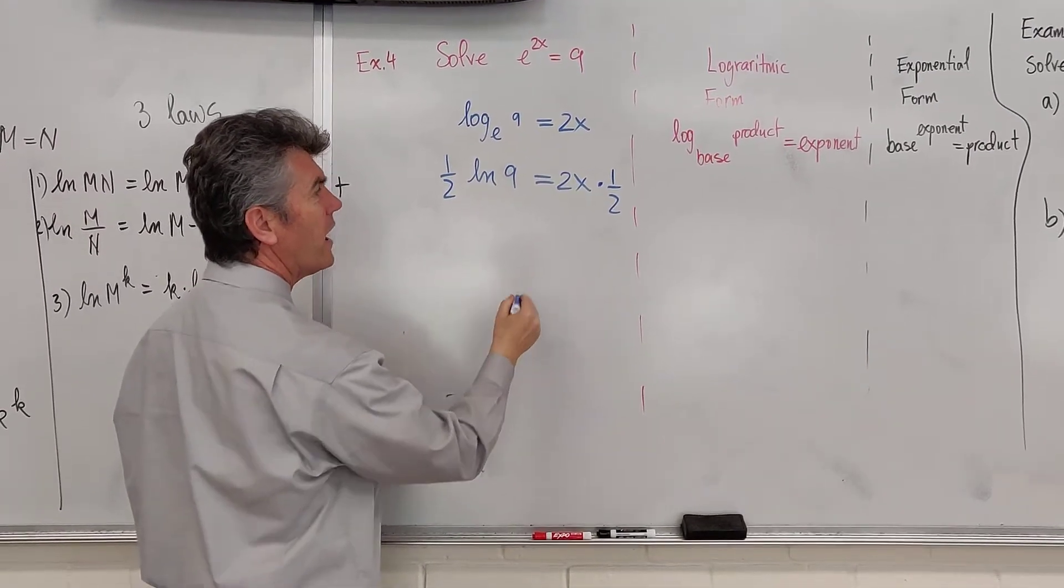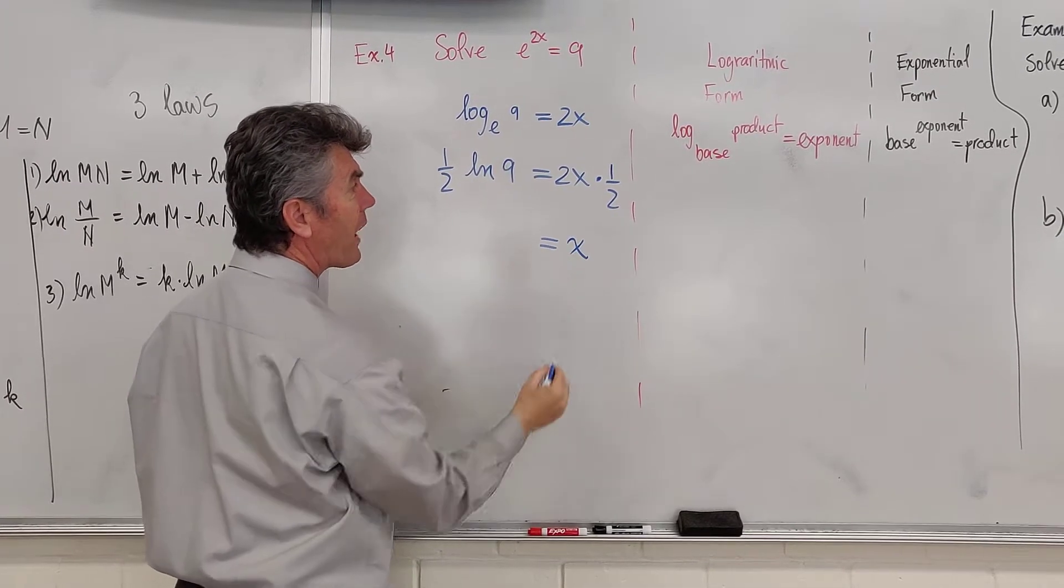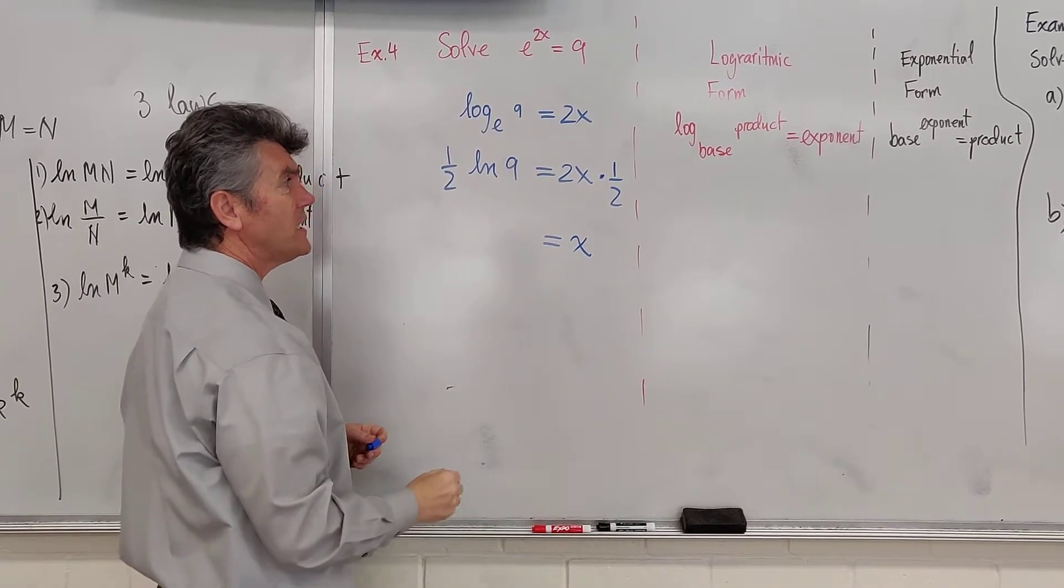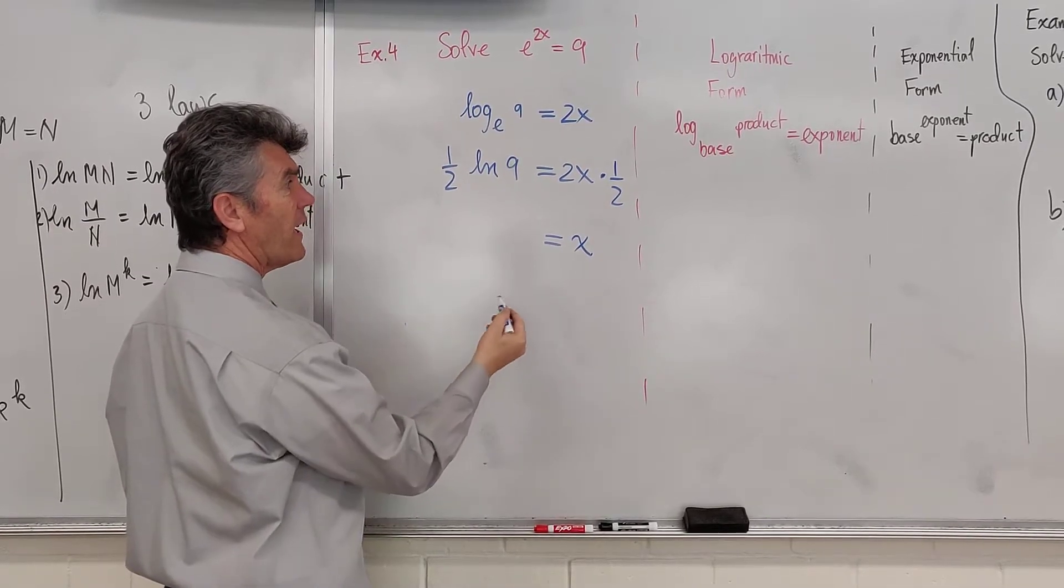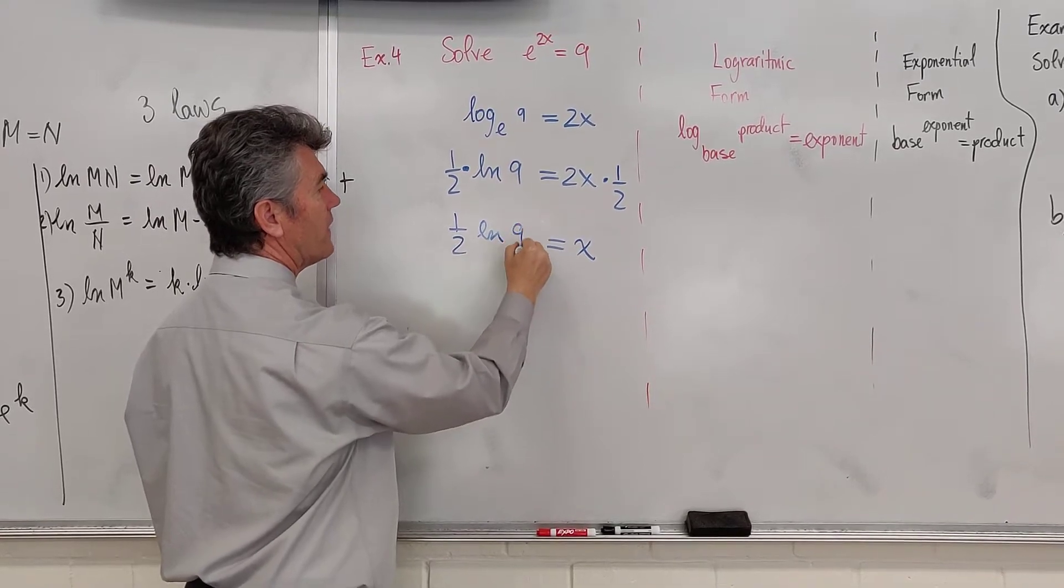All of this is totally unnecessary, like I said. I'm just practicing my laws and properties. We have x is equal to 1 half natural log of 9.